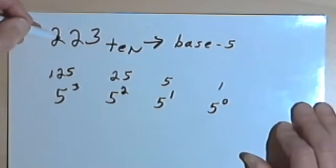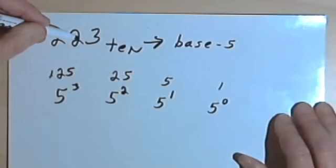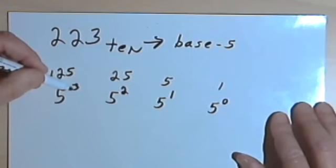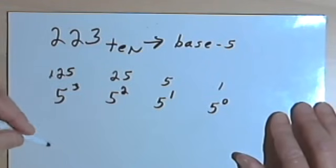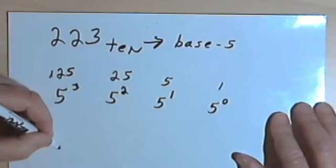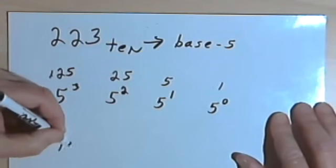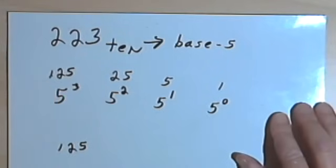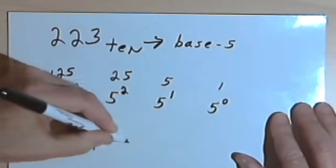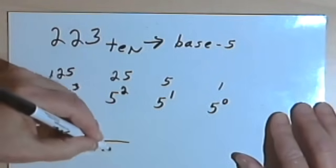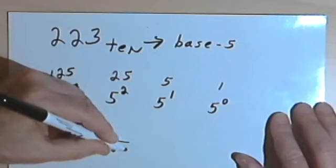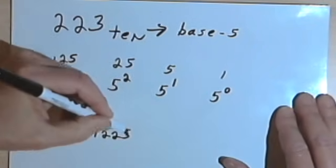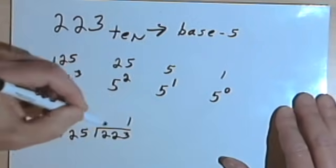Now I'm going to take that number 223 and find out how many 5 to the 3rds I have. I'm going to divide 125, which is 5 to the 3rd, into 223.